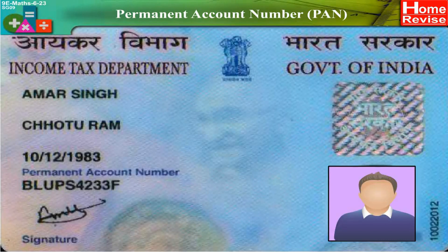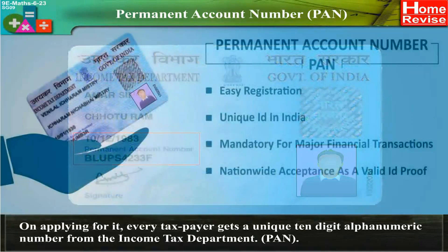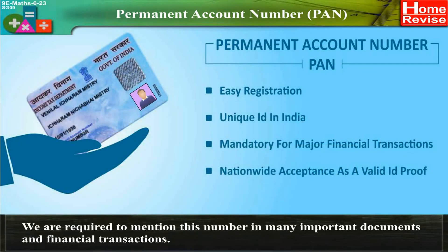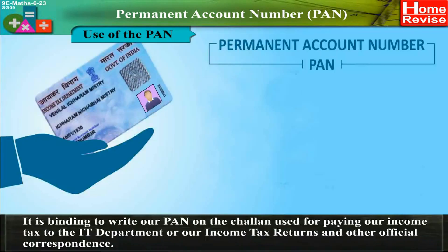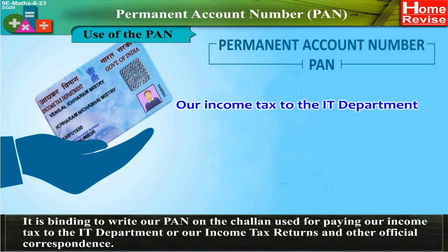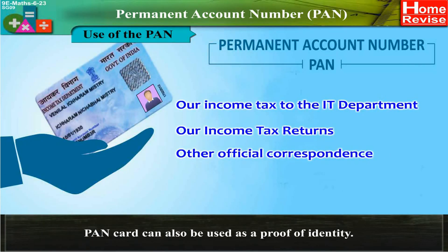Permanent Account Number (PAN): On applying for it, every taxpayer gets a unique 10-digit alphanumeric number from the income tax department. We are required to mention this number in many important documents and financial transactions. It is binding to write our PAN on the Challan used for paying our income tax to the IT department, or on our income tax returns and other official correspondence. PAN card can also be used as a proof of identity.